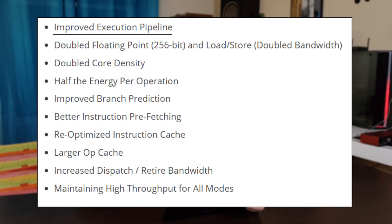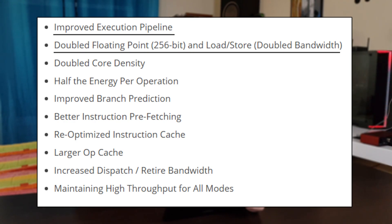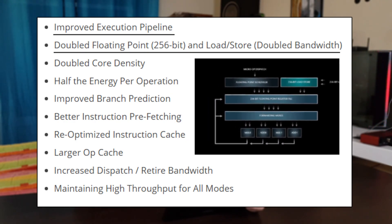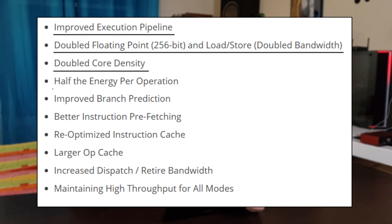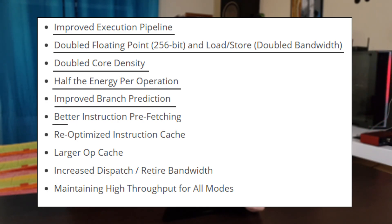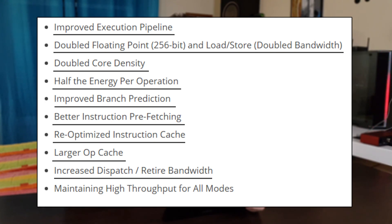Let's go over all the known changes: improved execution pipeline, doubled floating point — 256-bit instead of 128-bit on Zen+, doubled load/store data bandwidth, doubled core density, lower energy per operation due to 7nm versus GlobalFoundries 12nm, improved branch prediction, better instruction prefetching, re-optimized instruction cache, larger op cache, and increased dispatch and retire bandwidth.